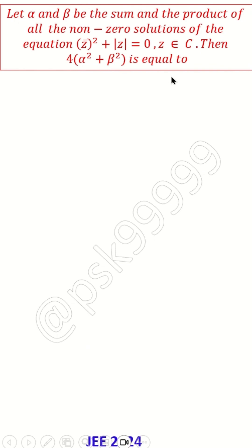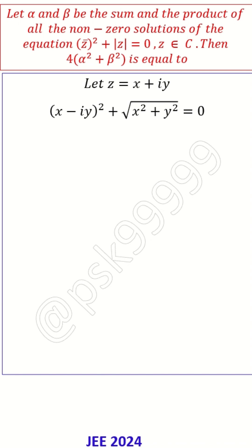Let z = x + iy. Once you know this, what you are looking at is the solution of the equation, and the non-zero solutions only we need. So (x - iy)² + √(x² + y²) = 0. If I expand it, this is what it will become.